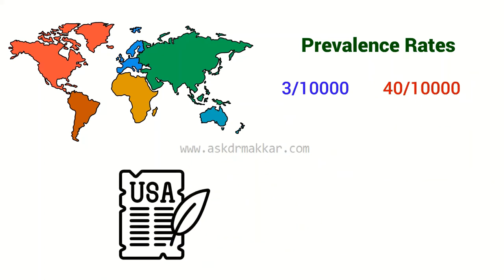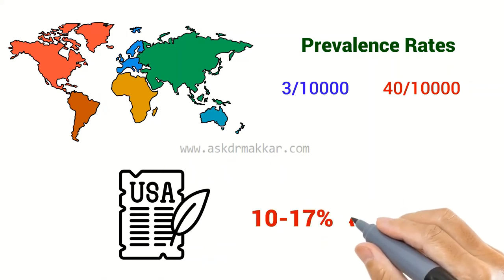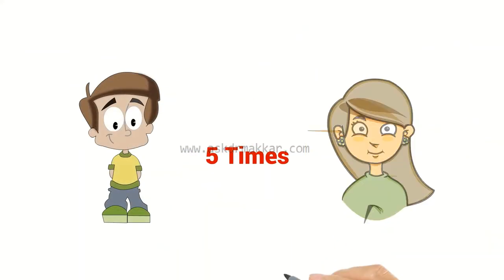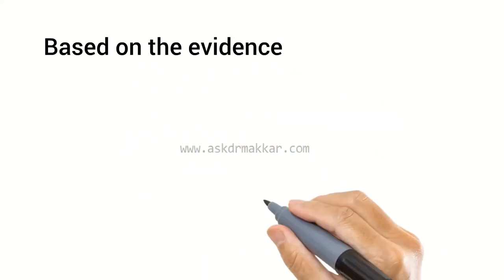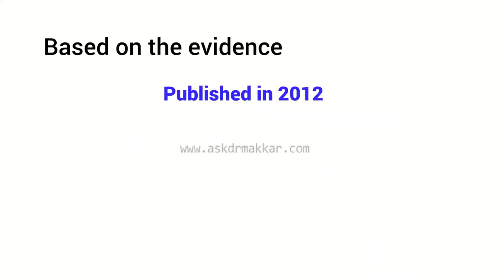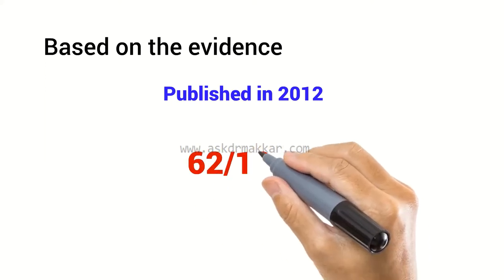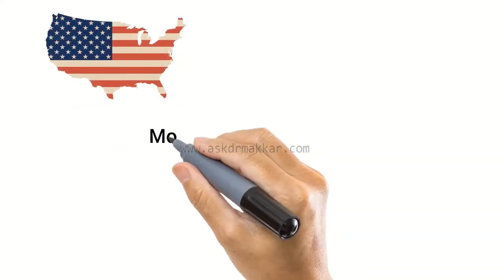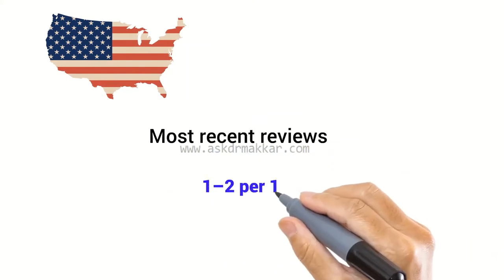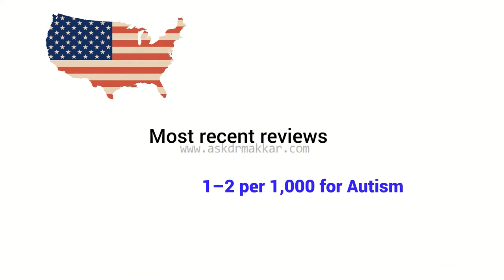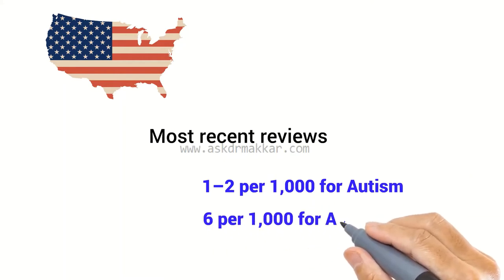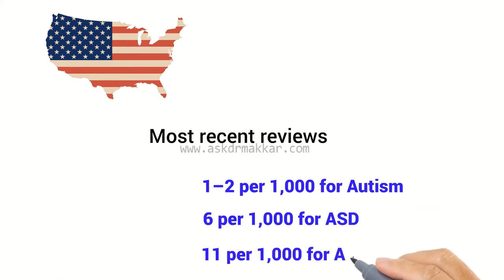U.S. government statistics suggest the prevalence rate of autism is increasing 10 to 17% annually. Boys are nearly five times more likely than girls to have autism. Based on evidence reviewed in a 2012 study, the median prevalence estimate of autism spectrum disorders was 62 of 10,000. Most recent reviews estimate a prevalence of 1 to 2 per 1,000 for autism, and close to 6 per 1,000 for ASD, and 11 per 1,000 children in the United States for ASD as of 2008.